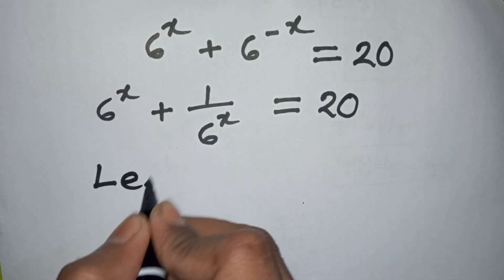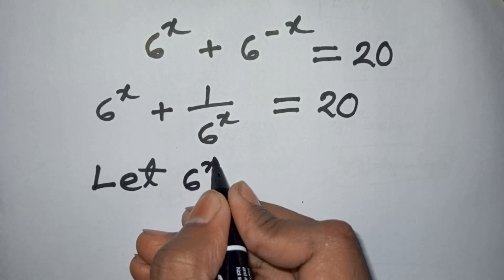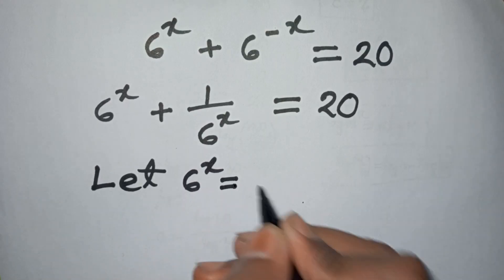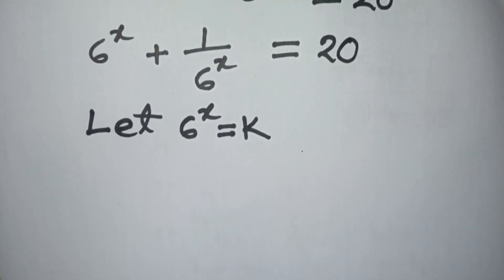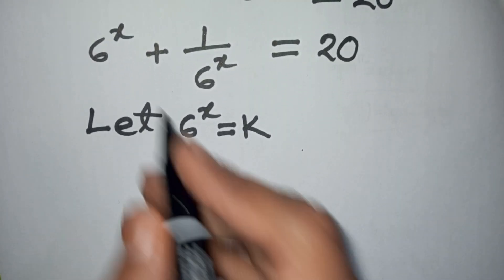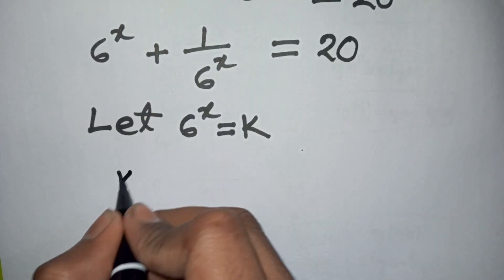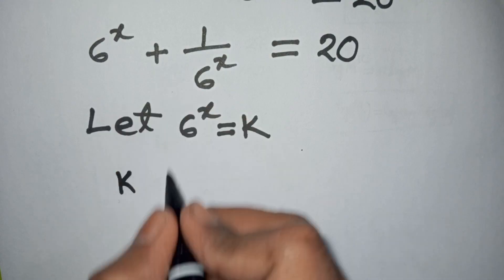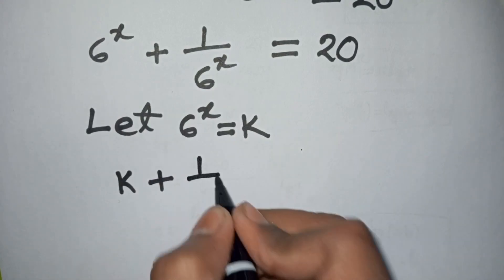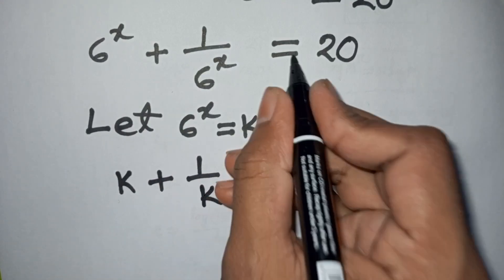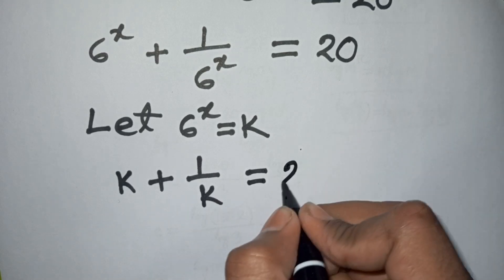In the next step, let 6^x be substituted by k. So this equation can be written as k plus 1 over k is equal to 20.